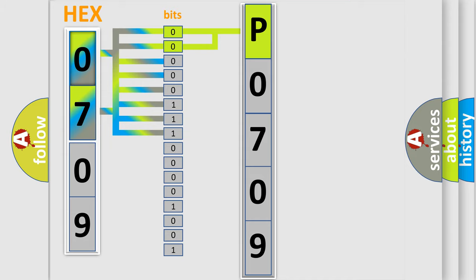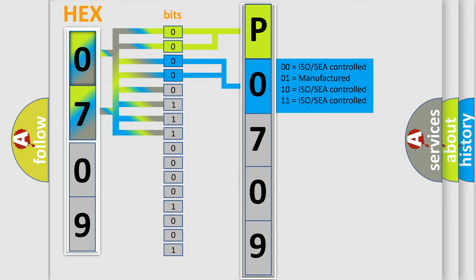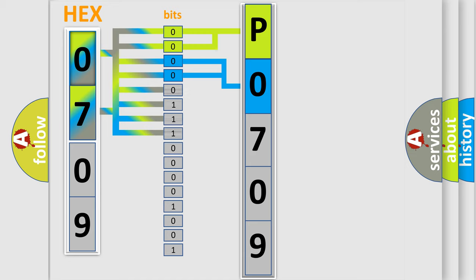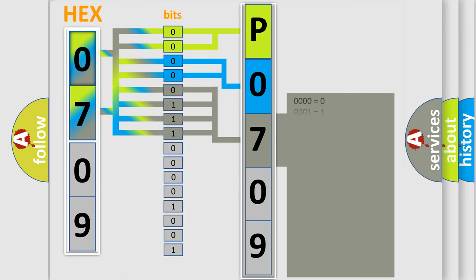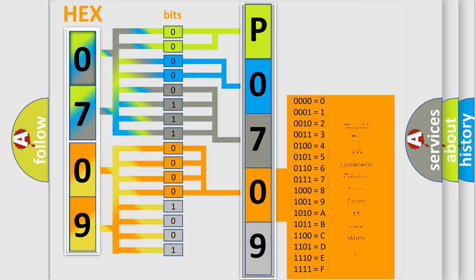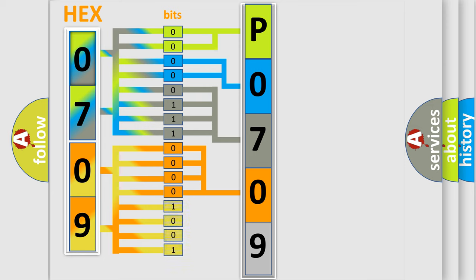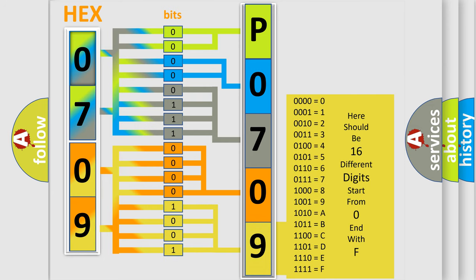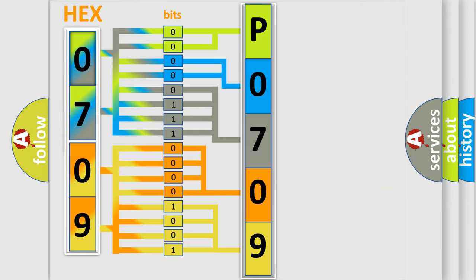The next two bits determine the second character. The last bits of the first byte define the third character of the code. The second byte is composed of a combination of eight bits. The first four bits determine the fourth character of the code, and the combination of the last four bits defines the fifth character. A single byte conceals 256 possible combinations.